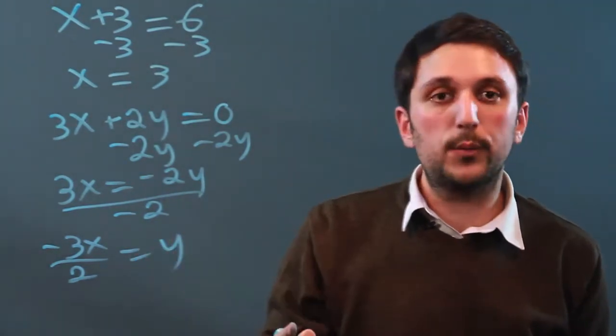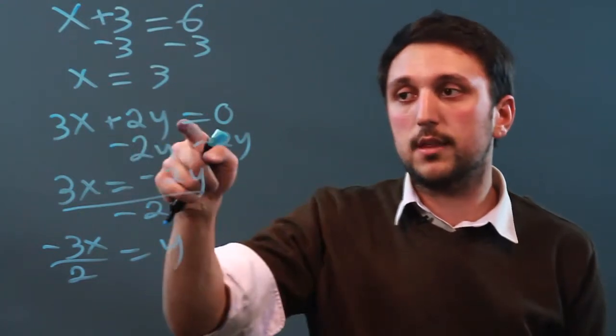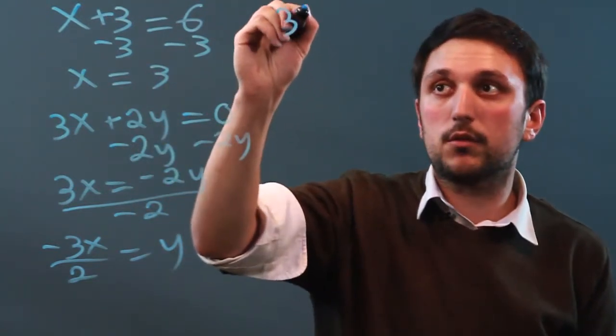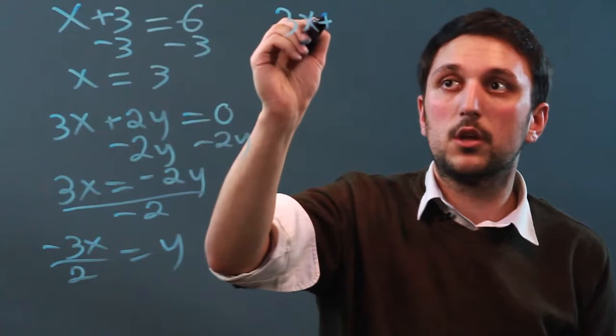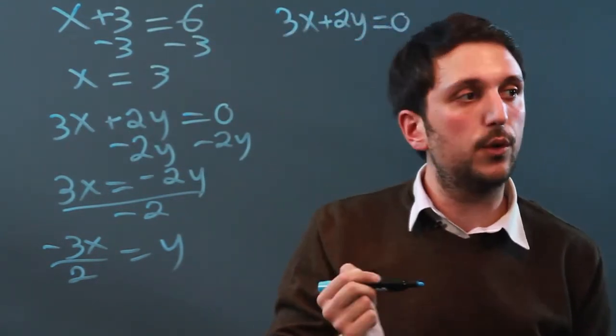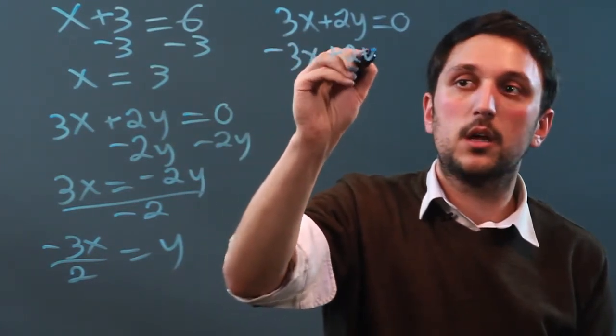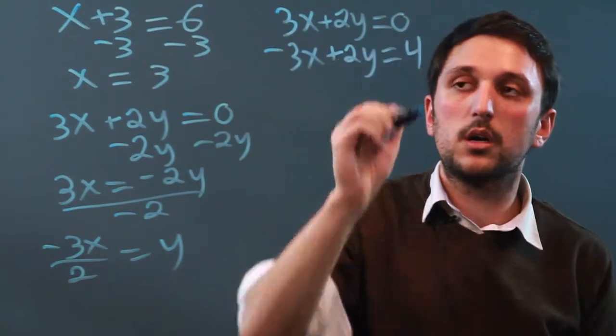So the only way we can solve a two variable problem is with a system of equations. So let's take this equation again, 3x plus 2y equals 0. But what if we also knew that negative 3x plus 2y equaled 4?